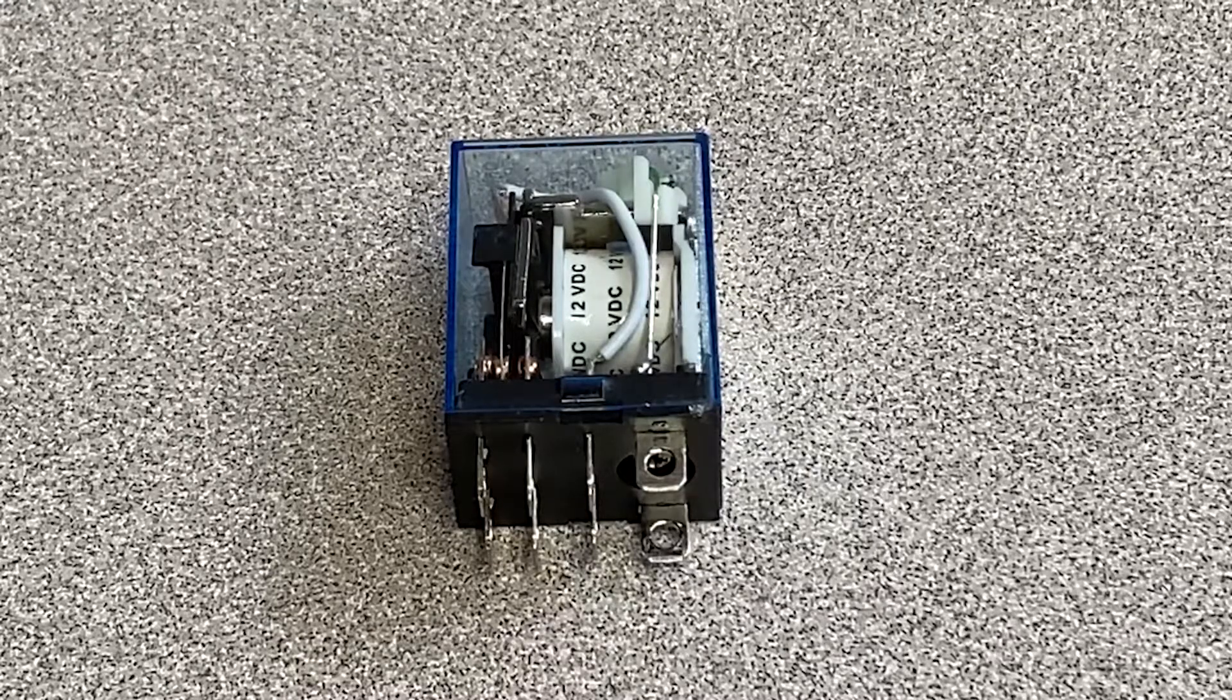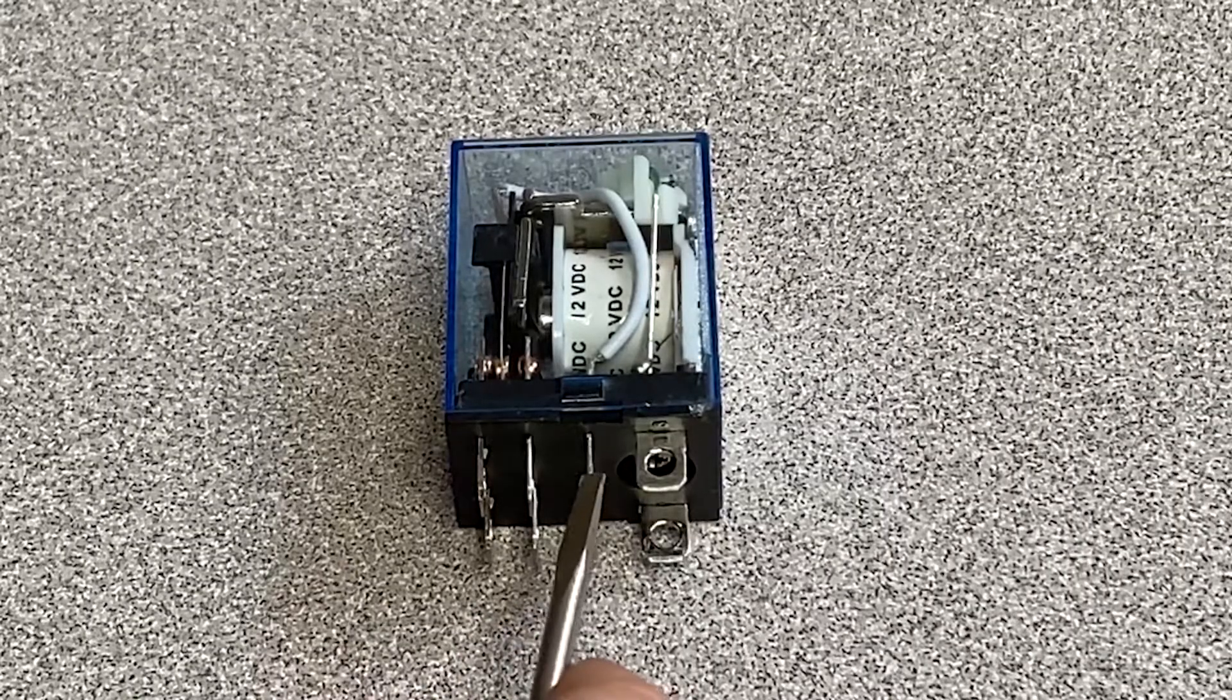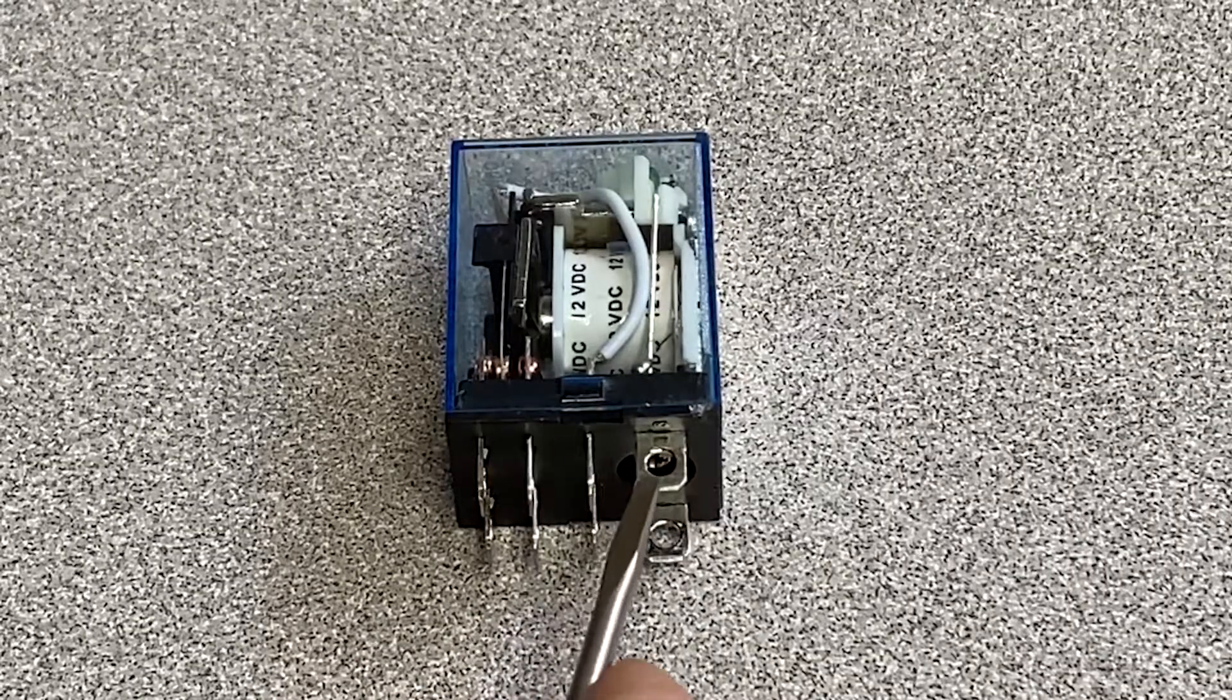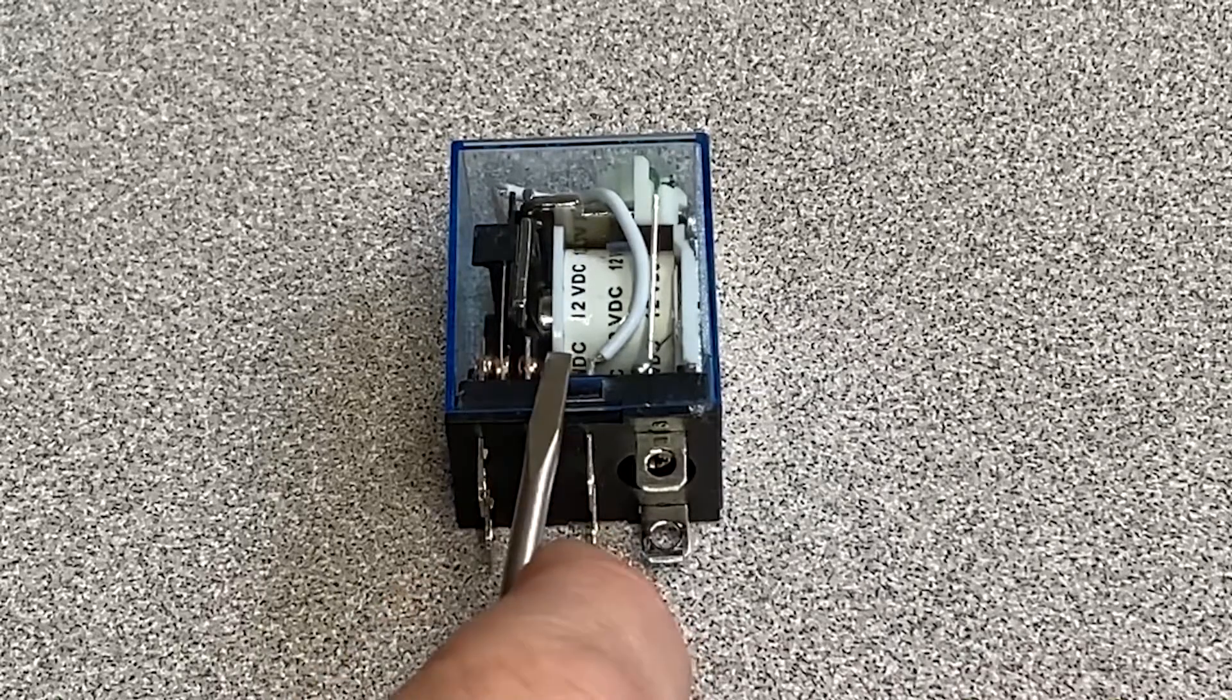So what is inductive spiking? When you have electricity flowing through a wire, as we learned in basic physics, it creates a magnetic field, which in the case of this relay is a great thing because it's what closes the relay and does whatever it is you need that relay to do.